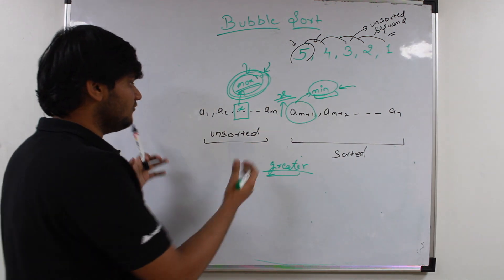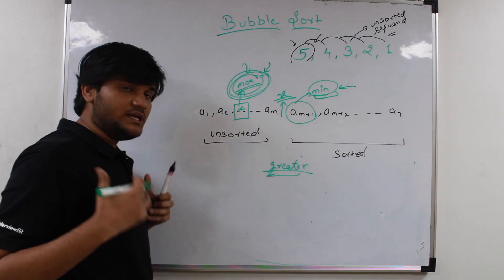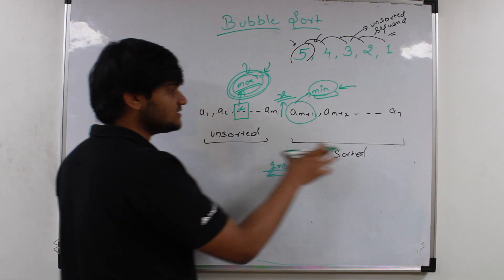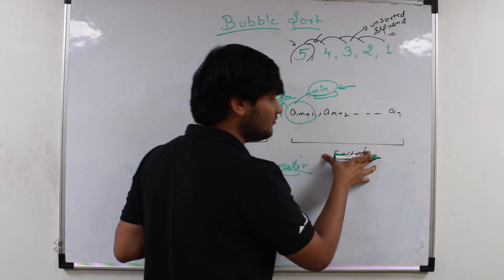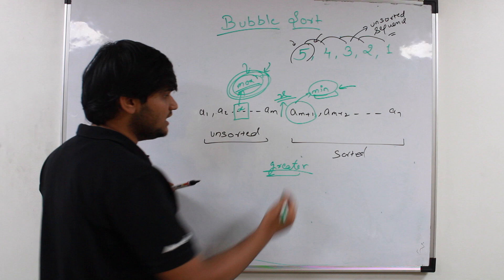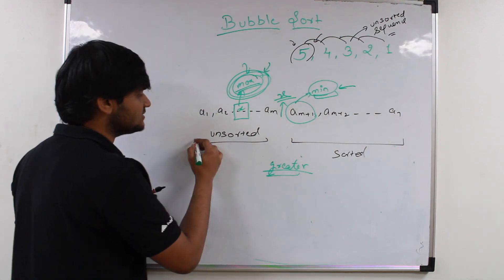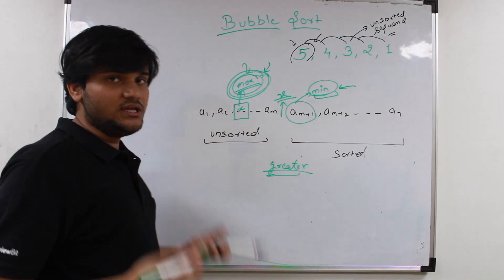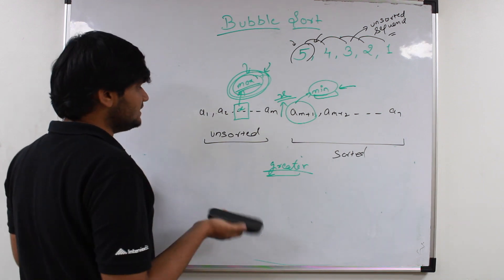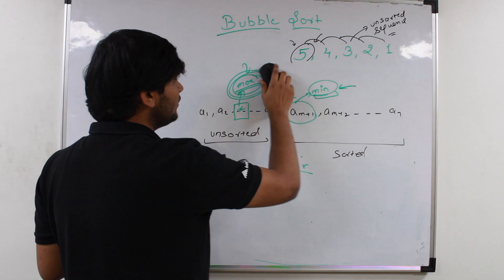So at each iteration, we will just divide our array into two parts. In the initial iterations, the whole array will be considered as the unsorted part and the size of the sorted part will be 0. After the complete sorting algorithm has been executed, the sorted part will be equal to the size of the array and the size of the unsorted part will become 0. So let us just see a basic dry run and see how we can apply bubble sort in the following case.